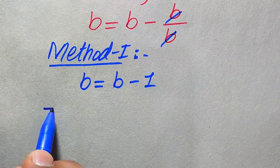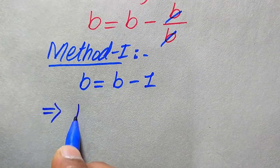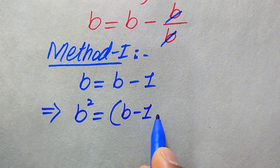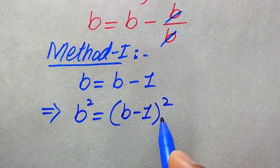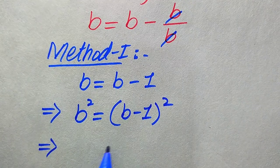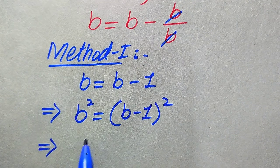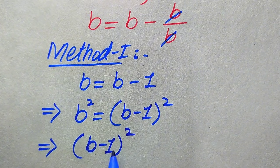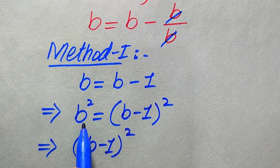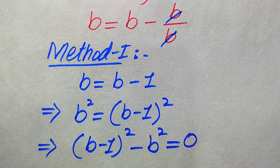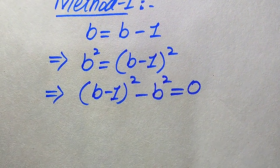In the first method, after cancellation we have b equals b minus 1. To find the values of b, we square both sides, giving b squared equals (b minus 1) squared. We then move b squared to the right-hand side, making it negative, so we have (b minus 1) squared minus b squared equals zero.